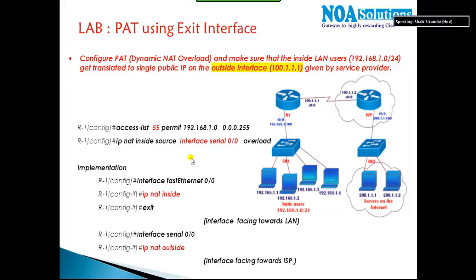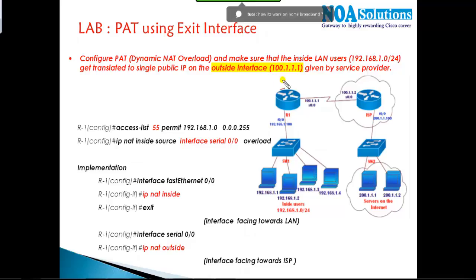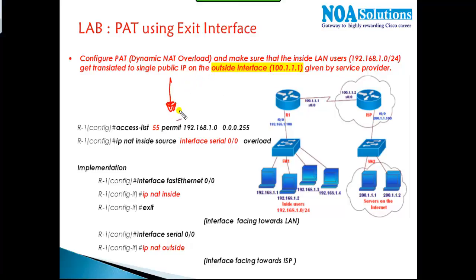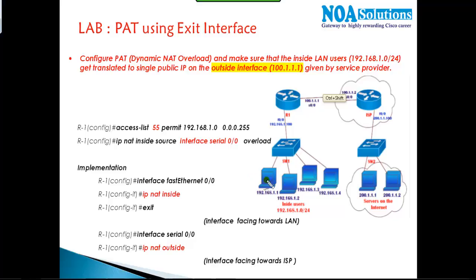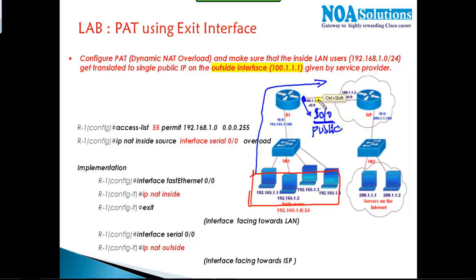There is another PAT scenario: PAT using the exit interface. Instead of using a defined pool with a specific public IP like 50.1.1.1, we can translate all private addresses from the 192.168.1.0 network using whatever public IP is present on the S0/0 interface — for example, 100.1.1.1 — which is commonly assigned by the service provider.